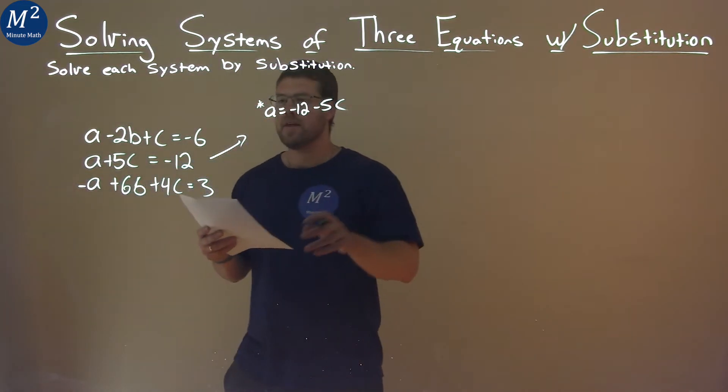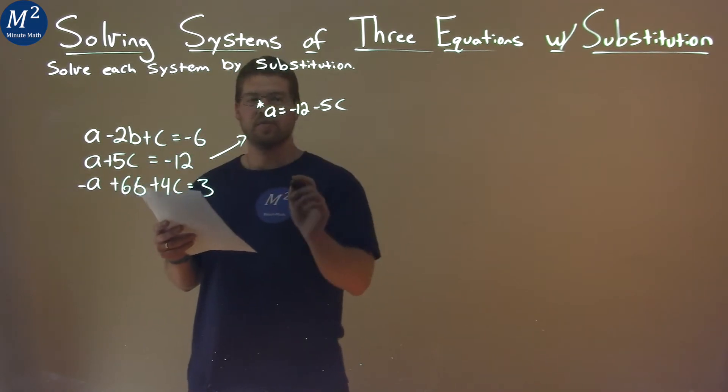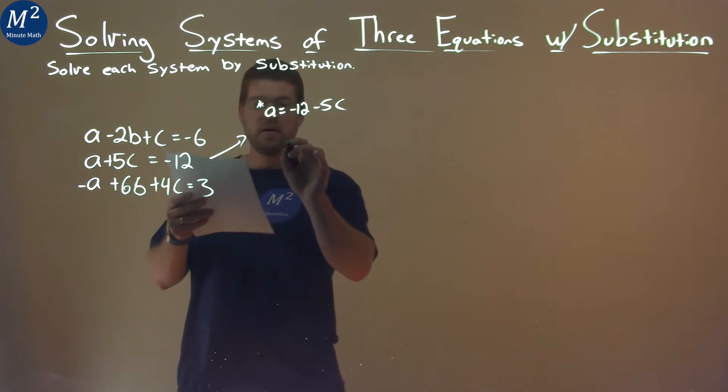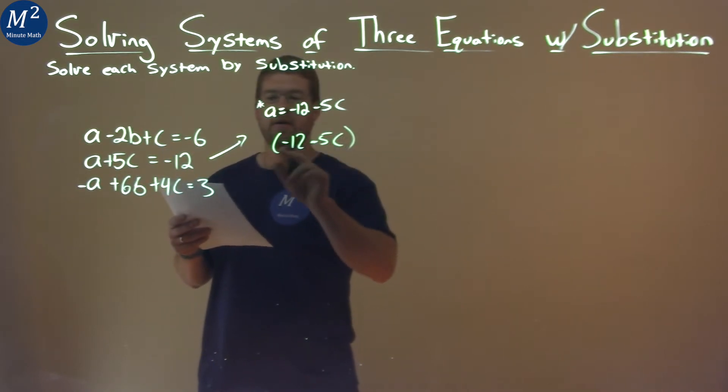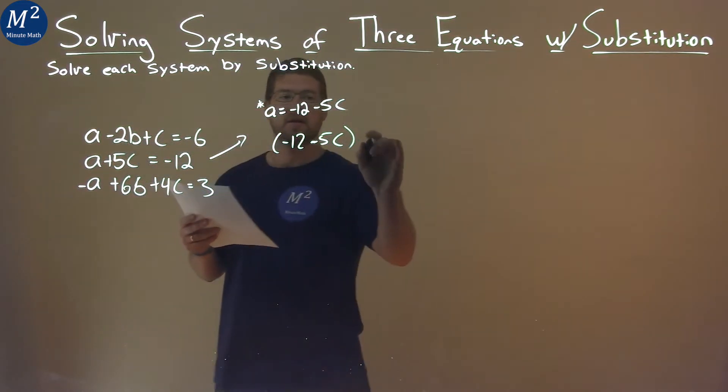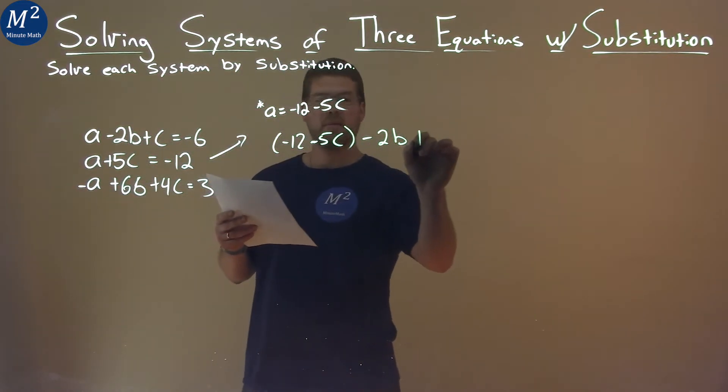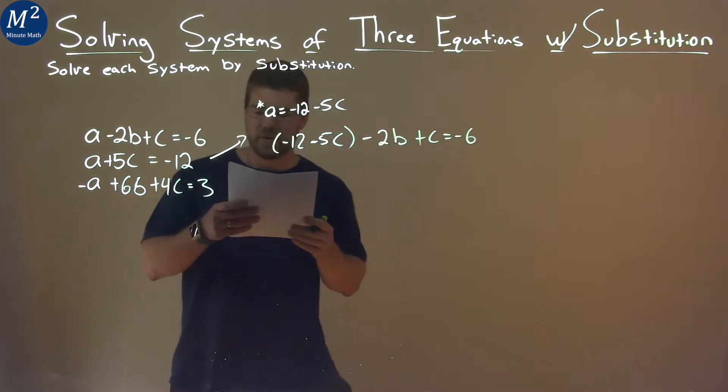So, now we're going to take that information with the first equation, and I'm going to put, well, instead of A, this negative 12 minus 5C in. So, I have negative 12 minus 5C from the second equation adapted, plug it in for A in the first equation. Then we have minus 2B plus C equals negative 6.